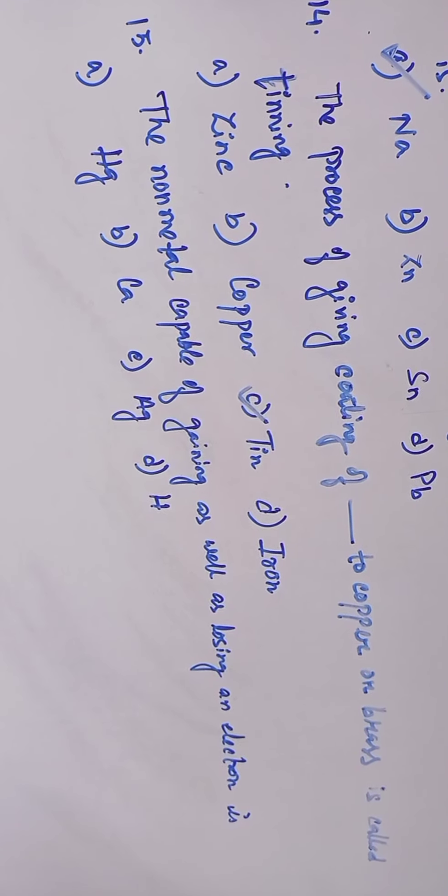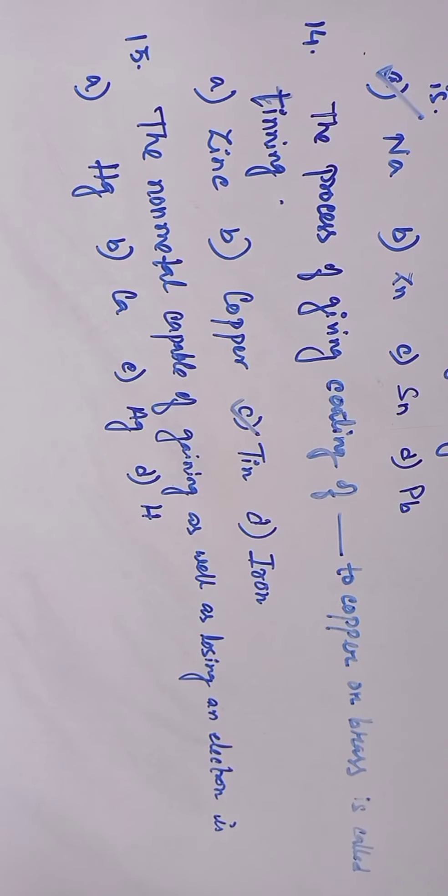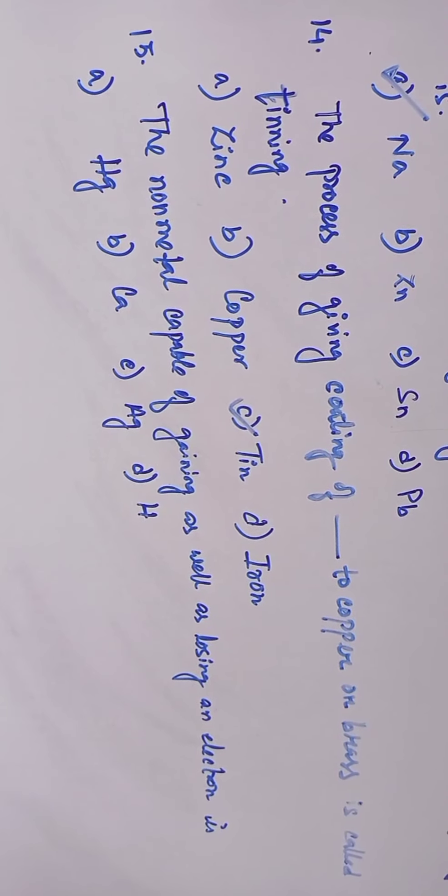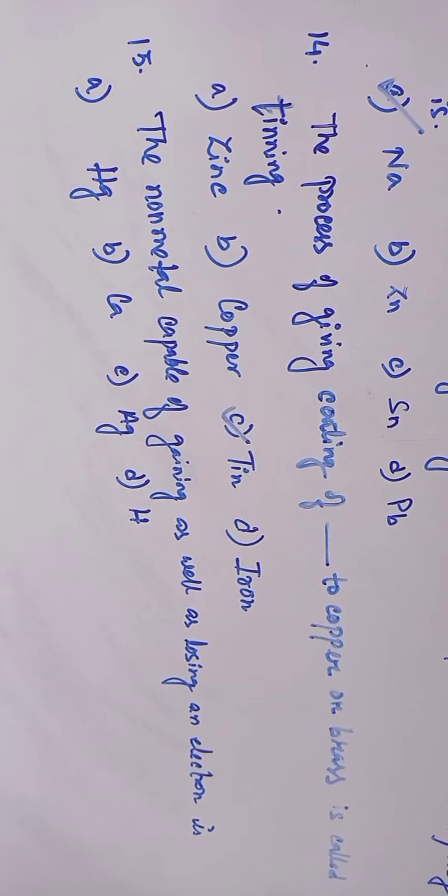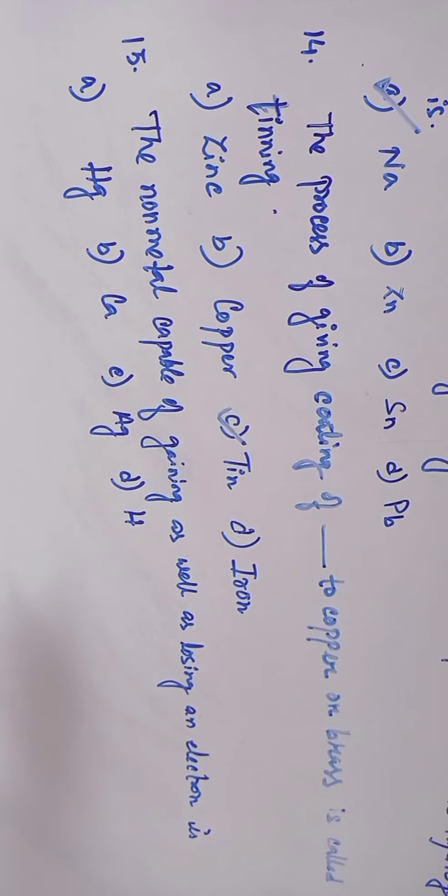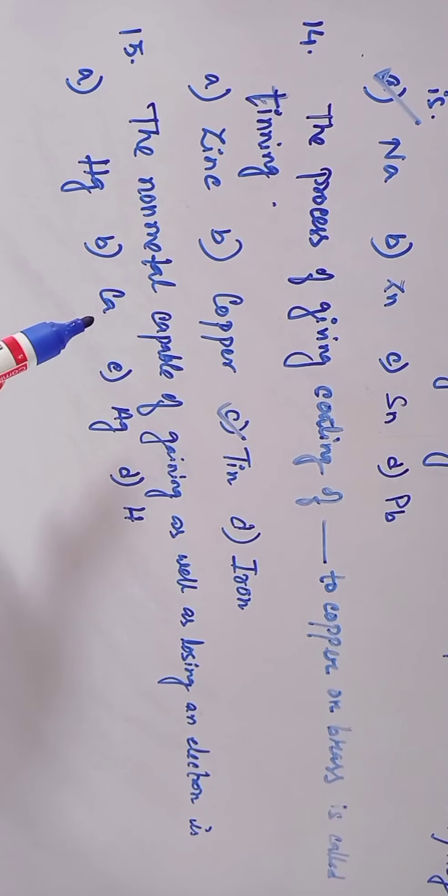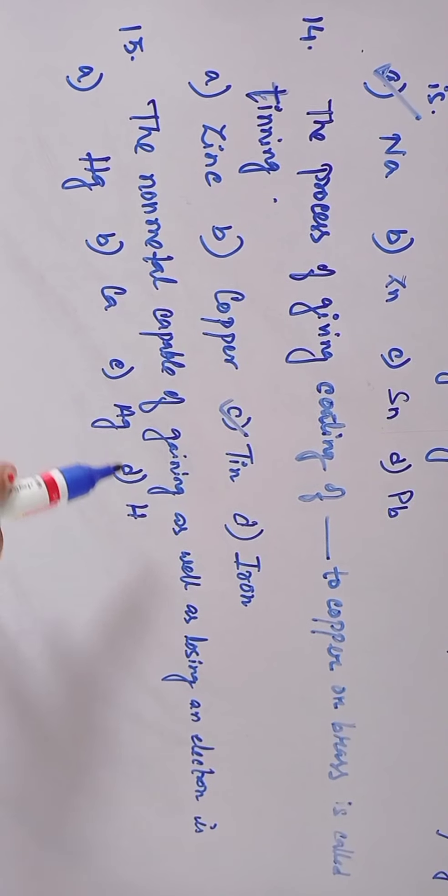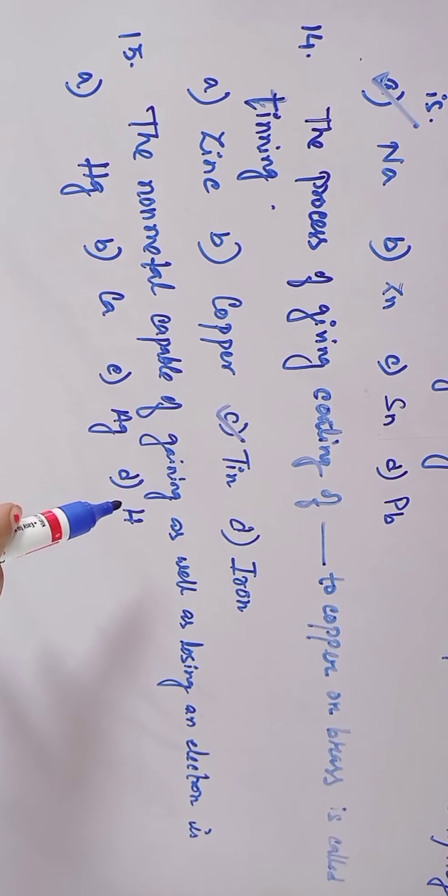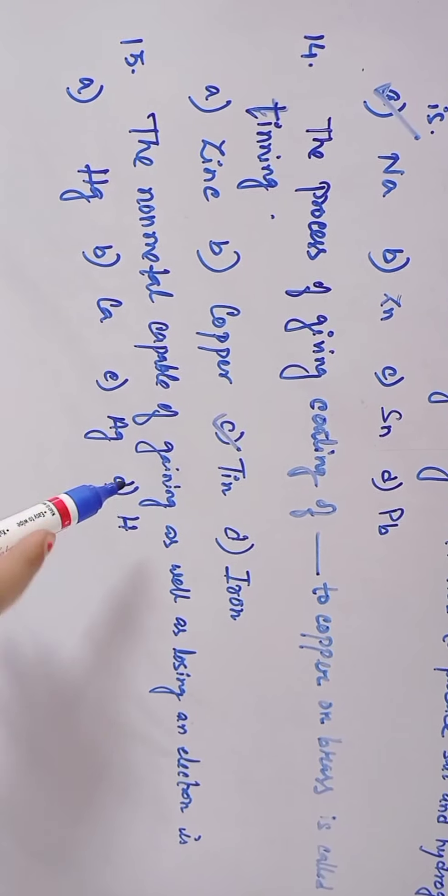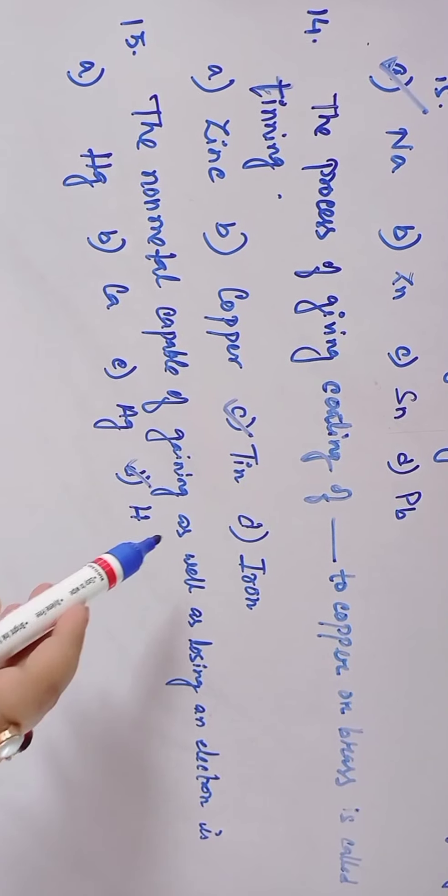Question 15: The non-metal capable of gaining as well as losing an electron is... Option A: mercury, Option B: calcium, Option C: silver, Option D: hydrogen. Hydrogen, Option D is the answer.